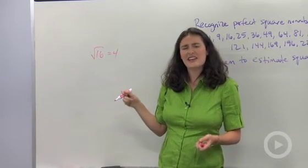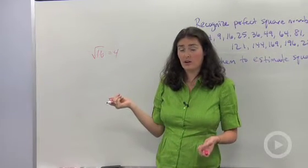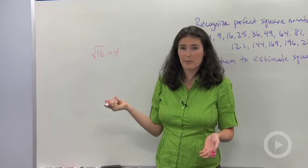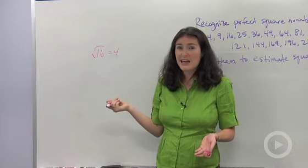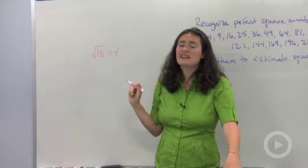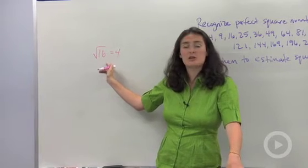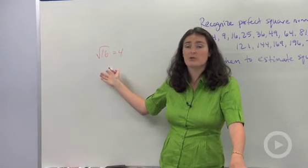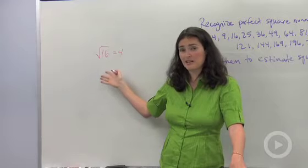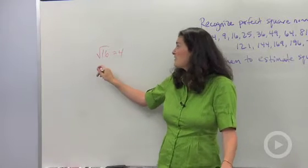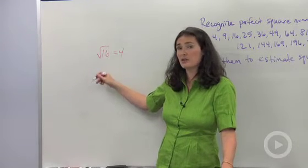Kind of. There's actually another number whose square, or the square root of 16 is also another number. Do you know what the other number is? Negative 4. It's kind of tricky. In math, we usually deal with what we call the principal square root. The principal square root is the positive one. But don't forget that the square root of 16 could also be negative 4.